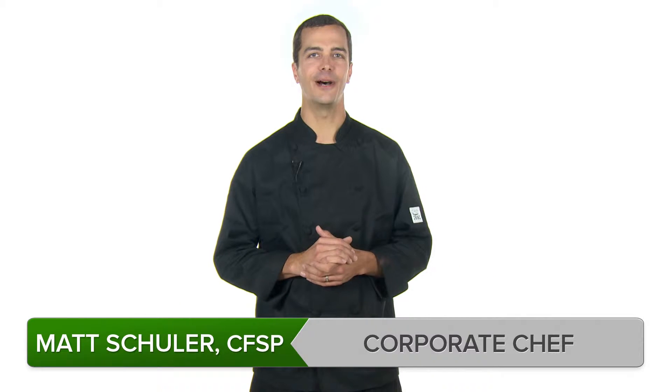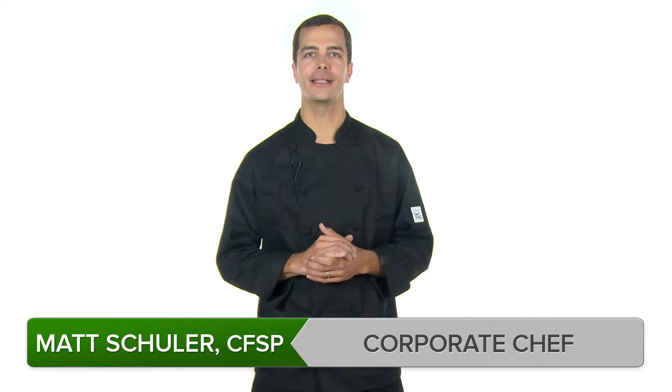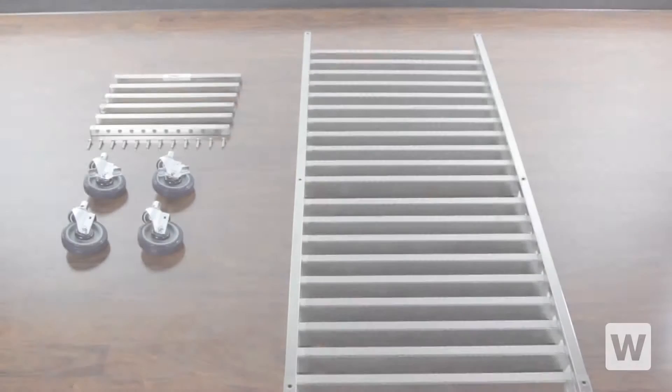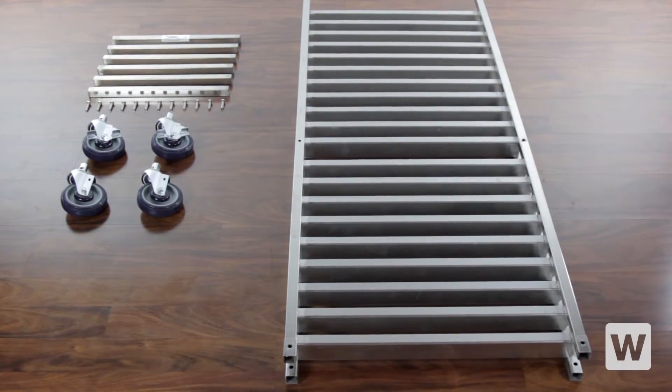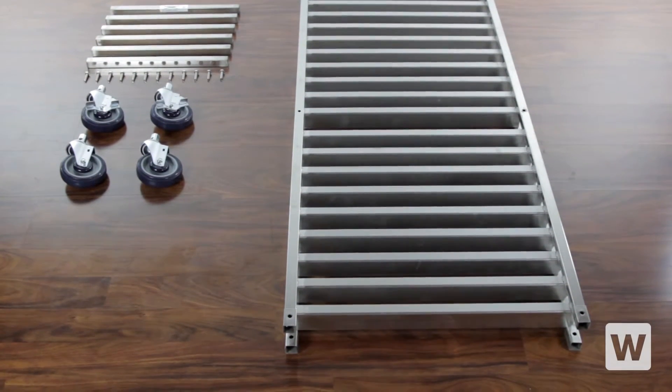If you're looking for a durable end load bun pan rack at an outstanding price, our Regency Stainless Steel Rack is the perfect solution for you. Because this model ships knocked down, you'll save money on shipping charges compared to a pre-assembled model.